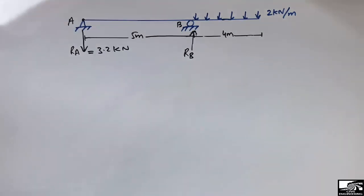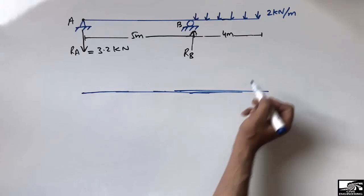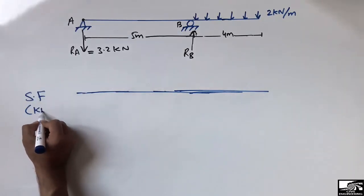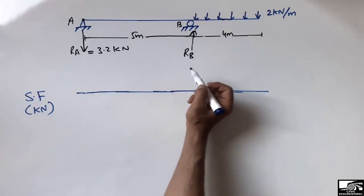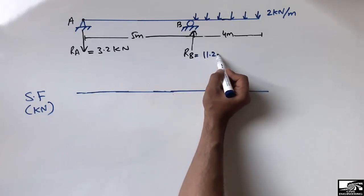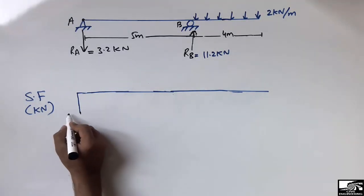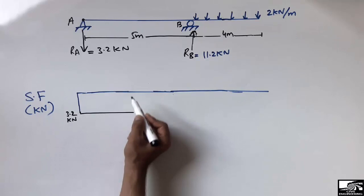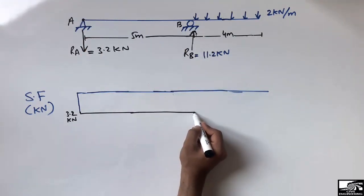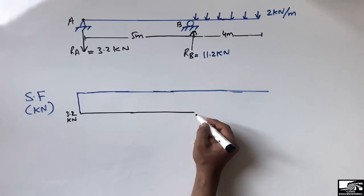To draw the shear force and bending moment diagrams, I first draw the reference lines. The reference line for shear force is drawn with units in kilonewton. Since RA acts downward, I draw 3.2 kilonewton below the reference line. There is no load in the first 5-meter portion, so the shear force remains constant at −3.2 kN. At B, RB = 11.2 kilonewton acts upward.